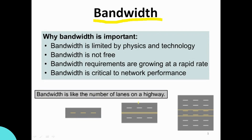The first one is Bandwidth. Bandwidth is the networking cable. This is a single lane, one way direction. This is a double lane road with multiple signals. This is a highway road.